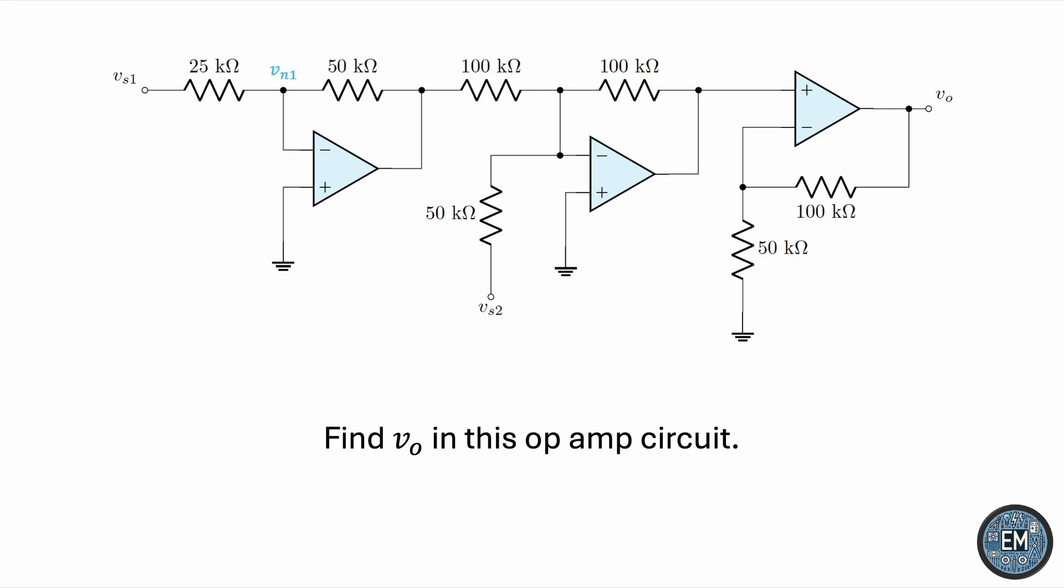We'll call this node VN1, since it's the inverting or negative input of op-amp 1. We'll call this node VP1, as in positive for op-amp 1. And this V01, meaning output of op-amp 1. And we'll keep this going, we'll call this node VN2, meaning this node should be VN2 as well, because it's just a connection with a wire. This node will be VP2, VO2, VP3 over here, and finally we have VN3.